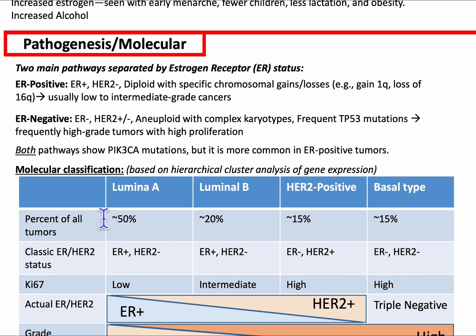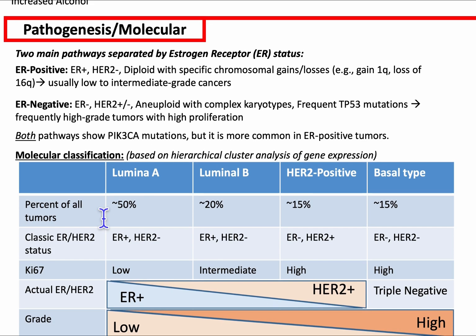Let's talk about the pathogenesis — the molecular basis of breast cancer. It can be seen as two main pathways separated by estrogen receptor status. ER positive HER2 negative tumors are diploid with specific chromosomal gains and losses, including gain of 1q and loss of 16q, and lead to usually low to intermediate grade cancers. ER negative HER2 positive or negative tumors are aneuploid with complex karyotypes, frequent TP53 mutations, and frequently high grade with high proliferation. Both pathways show PIK3CA mutations, but it is more common in the ER positive tumors.